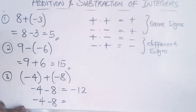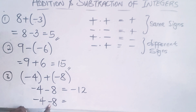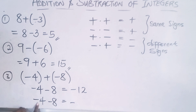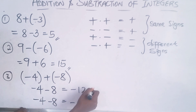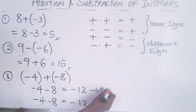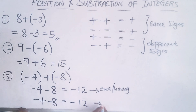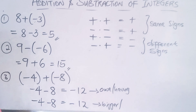Another method: look at the sign in front of the bigger number. Eight is the bigger number, and it has a minus sign in front of it. So the answer will be negative. Minus times minus gives you plus, meaning you add the numbers together: four plus eight equals twelve, so the answer is negative twelve. You can use whichever method you prefer.